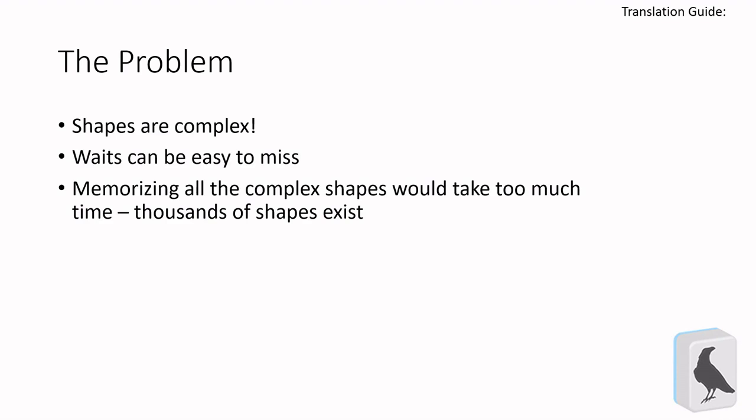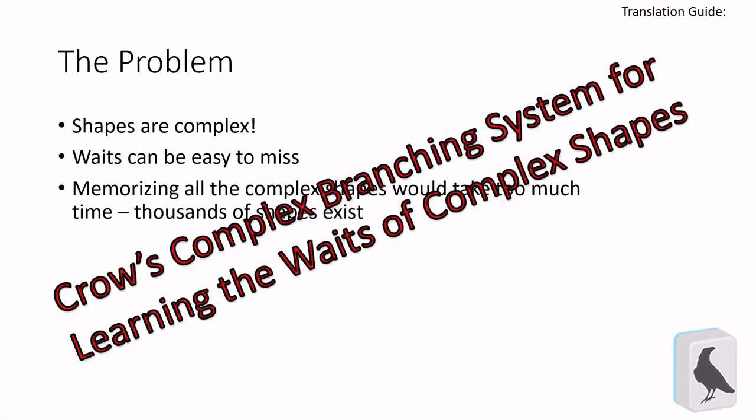There's so much going on within the incredibly high number of different shapes in your hand, but one of the harder ones to learn is sections of complex shapes that have one or more triplets in them. So let's take a look at a tool that I have that can help out, just for learning purposes. I call it Crow's Complex Branching System for Learning the Waits of Complex Shapes, or CCBSLWCS for short. On second thought, that might be harder to remember than the tool itself. Scratch that. Let's just call it the branching method.